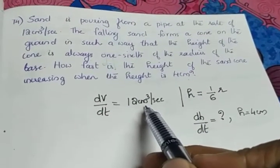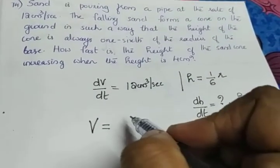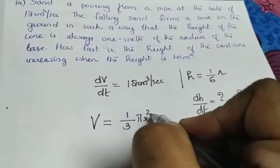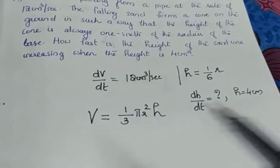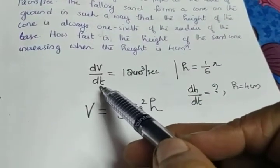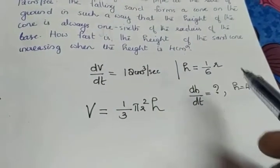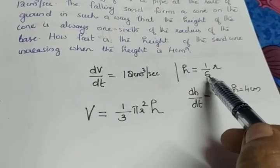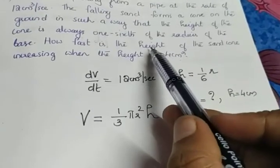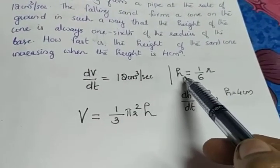Since dV/dt is given as 12 cm³ per second, we write the formula for the volume of a cone: V = (1/3)πr²h. There are three variables here: V, r, and h. We need to differentiate with respect to t. Before differentiating, we use the relation h = (1/6)r to reduce variables. Since we need dh/dt, we will substitute for r.